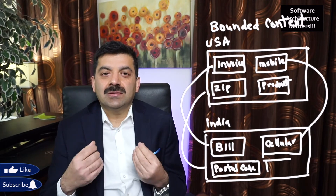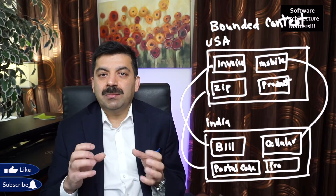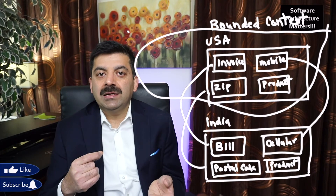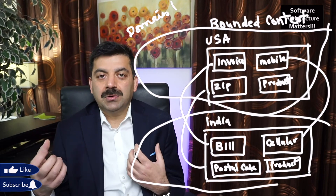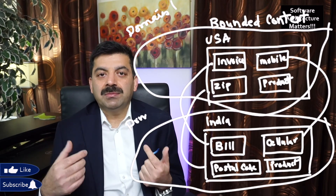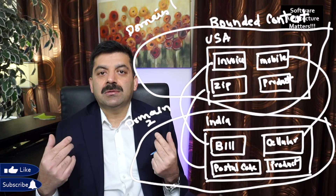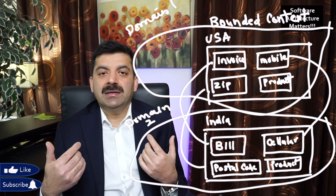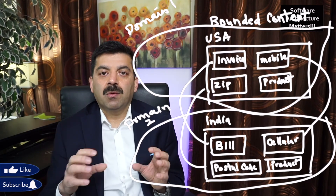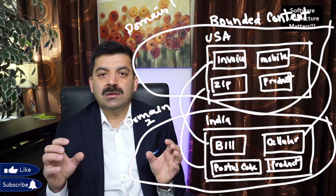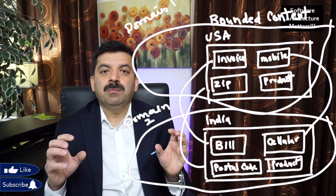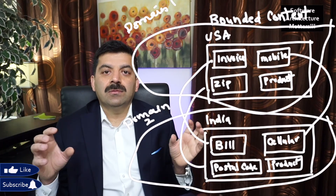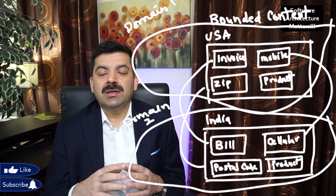Bounded contexts solve this problem by creating subdomains. In the Indian subdomain, you may use the terms billing, cell phone, and postal code, whereas in the American domain you would use the American terms. Some of the models and concepts could be interrelated and some could be independent. The benefit of dividing models into subdomain models using the bounded context concept is that these models can develop and grow independently, without being tied down by a unified model.